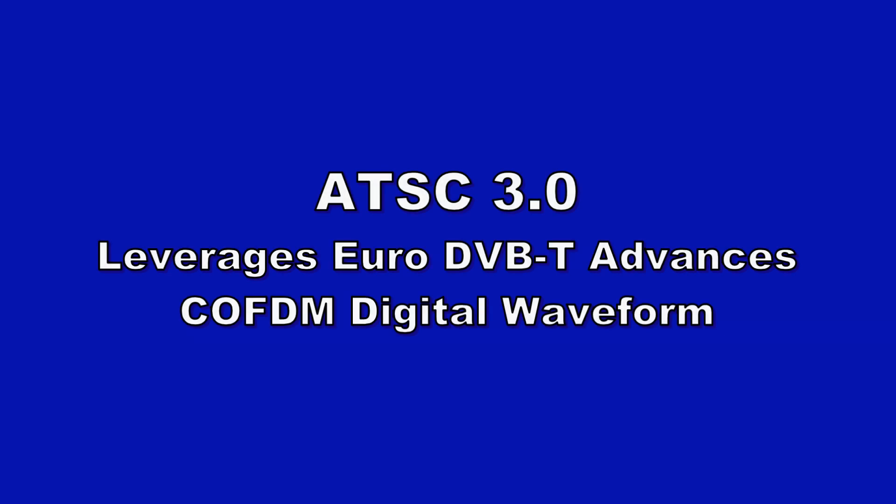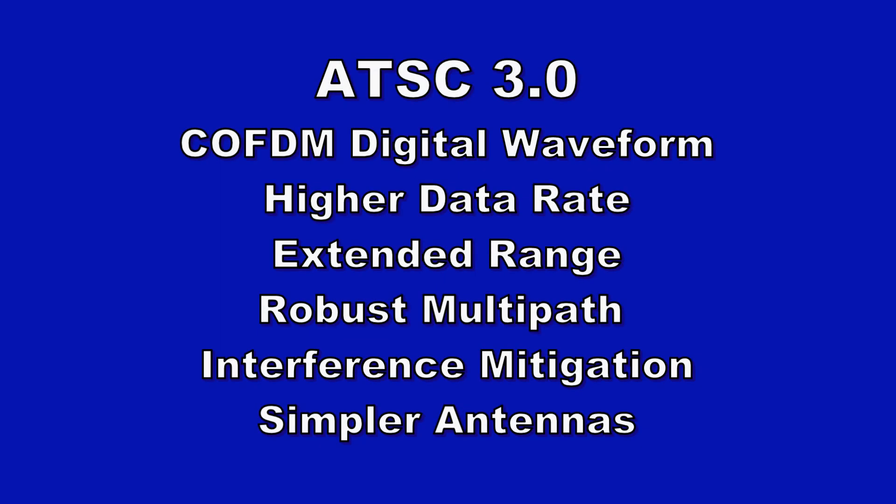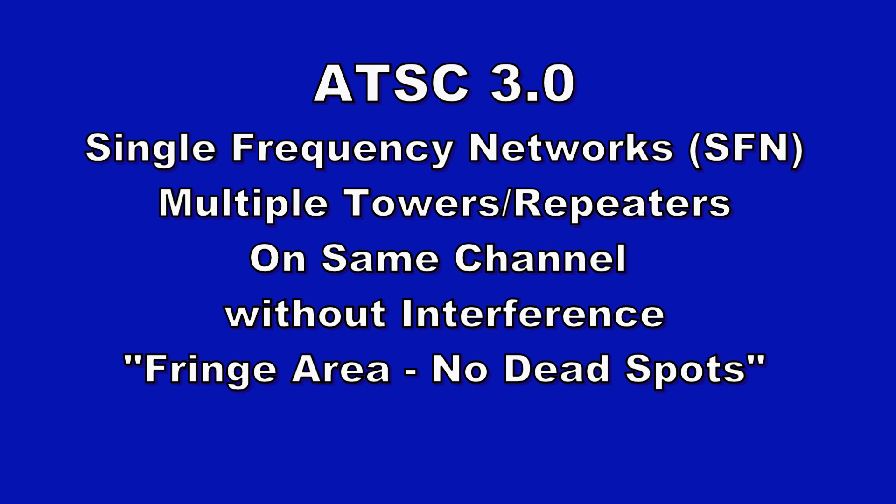What does 3.0 promise? ATSC 3.0 leverages the European DVB-T advances that have been going on for the last 15 years. This European standard was based on COFDM digital waveforms — Coded Orthogonal Frequency Division Multiplex. Higher data rates are involved, you get extended range from processing gain, and it's a robust multipath and interference system that allows you to use simpler indoor antennas. Further, ATSC 3.0 is a true single frequency network — an SFN — allowing multiple towers and repeaters to fill in the gaps, all working on the same channel without interference. This is going to be really important in fringe areas and tight urban areas.